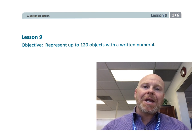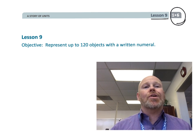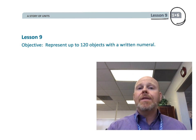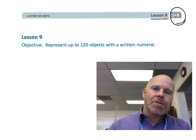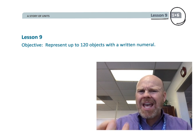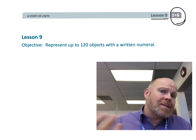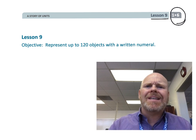Alright, this is first grade module 6 lesson 9 and in this lesson students are going to be representing up to 120 objects with a written numeral. What does that mean? Well students are going to be given pictures of objects, groups of 10 plus some ones and then they're going to take that picture and represent it as a number 114 or 93. So let's get started.